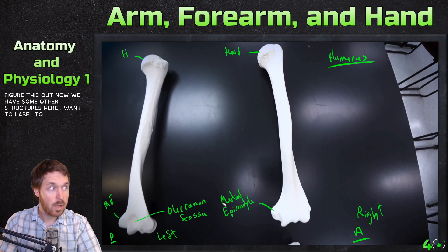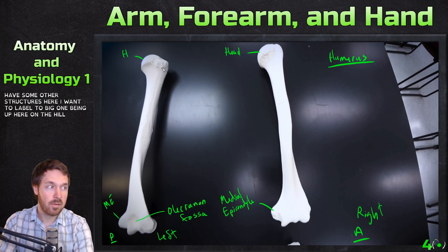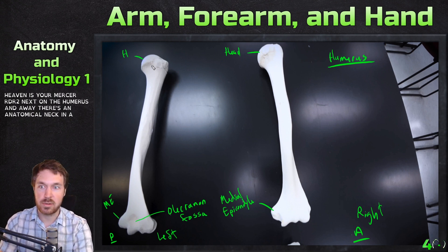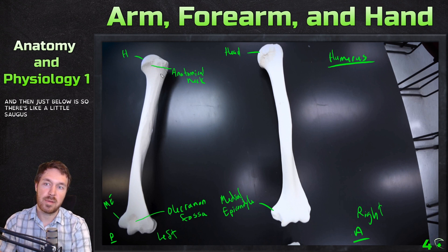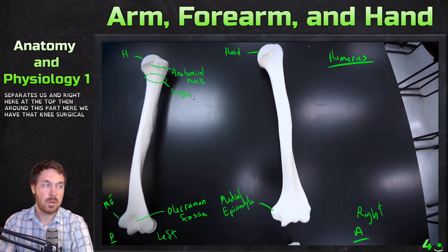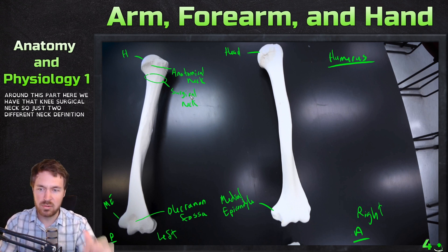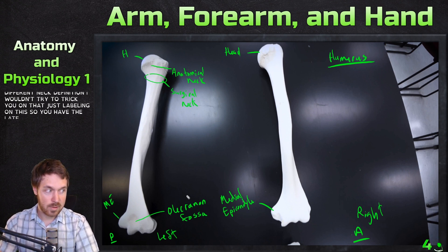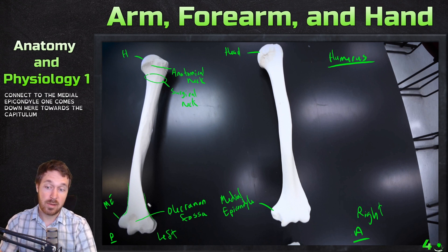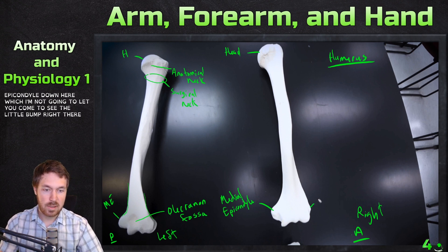Up at the head there are two necks on the humerus. Just below the head is the anatomical neck, and then below that is the surgical neck — they're separated by a little sulcus. Further down we have the lateral epicondyle, and running along the shaft there's the lateral supracondylar ridge and the medial supracondylar ridge.